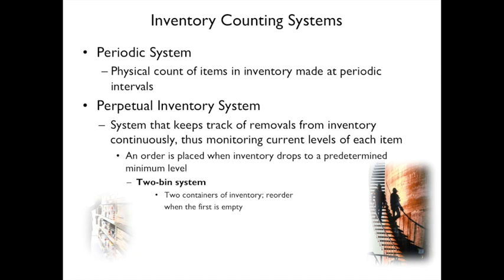As soon as I run out in the shower, I take the one out of the medicine cabinet and add shampoo to my shopping list. We do the same thing with deodorant, soap, and laundry detergent. There are a lot of things we use a two-bin system for — even vitamins. We'll have one open, and as soon as it's used up, it goes on the list.